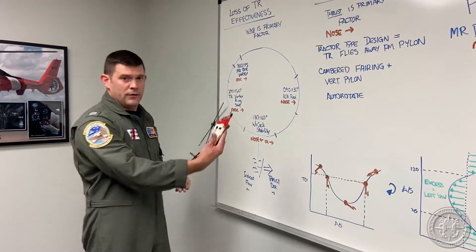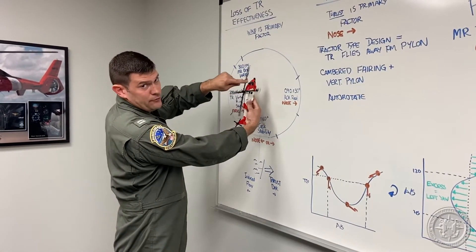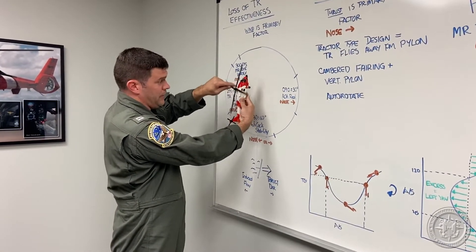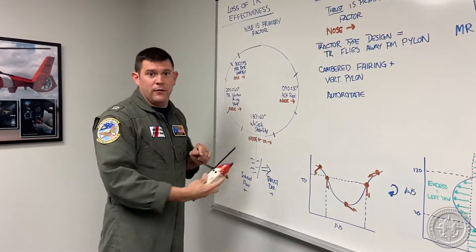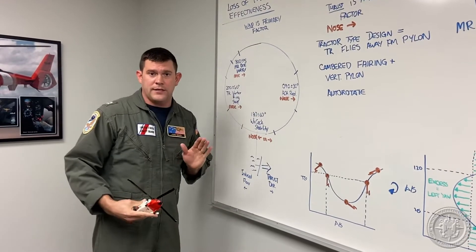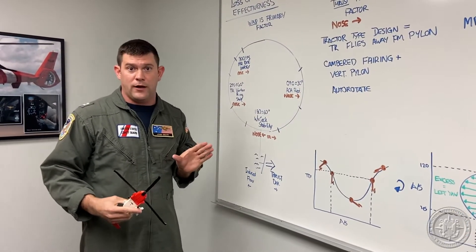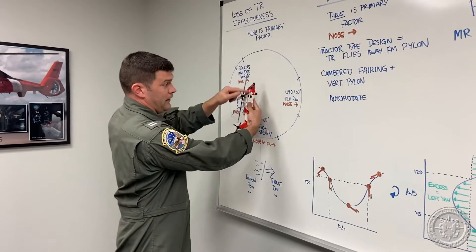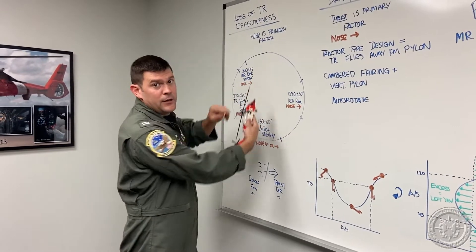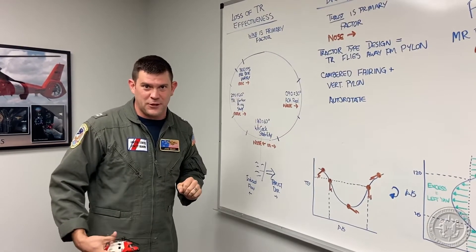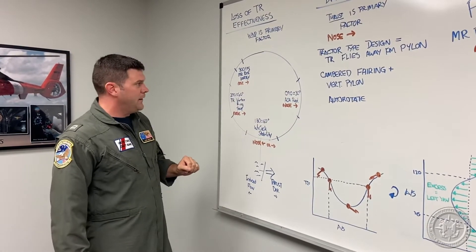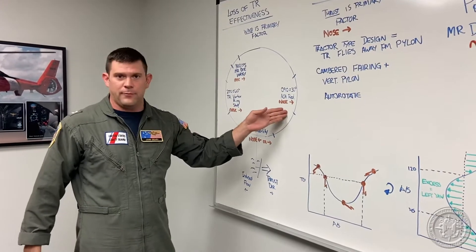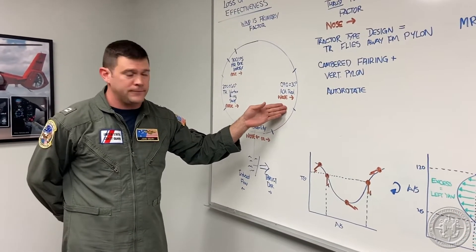So if here's our helicopter, the disc will rotate like this if viewed from the top. Now it should go without saying that all helicopters that do that are better than helicopters that spin the other way, but it's an important assumption to clarify. We'll start when wind is coming from the three o'clock position of the helicopter.